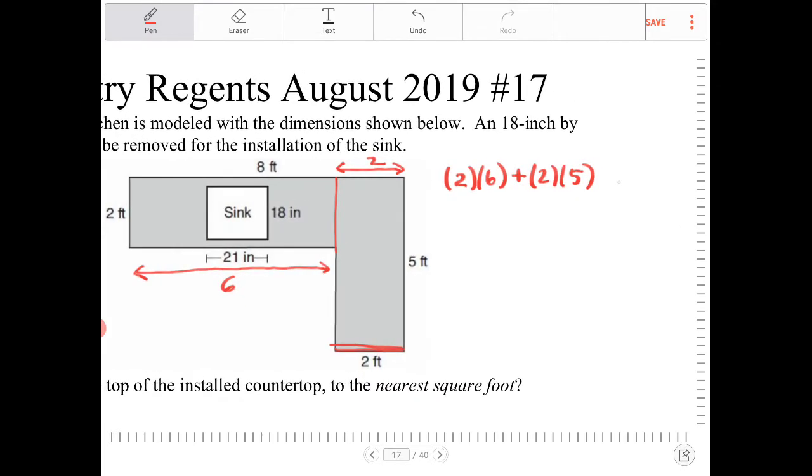And what we do with this is we've got to add them together, and then at the end we're going to subtract it by the area of the sink.